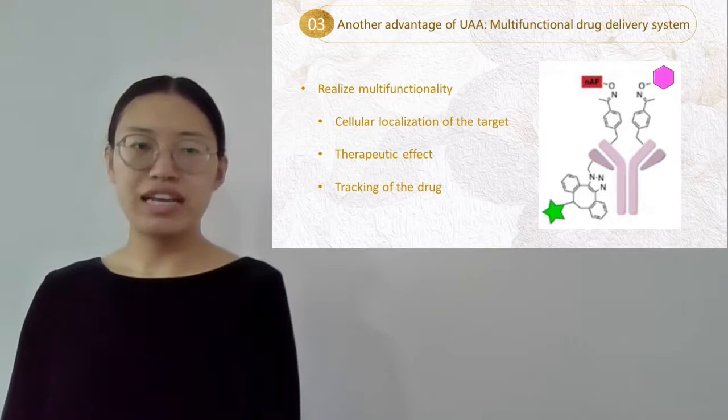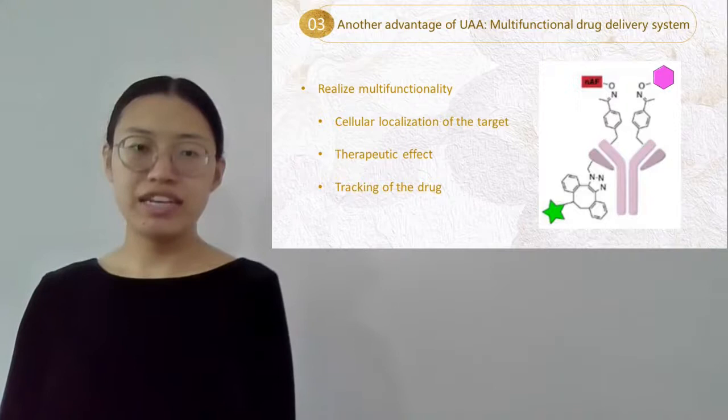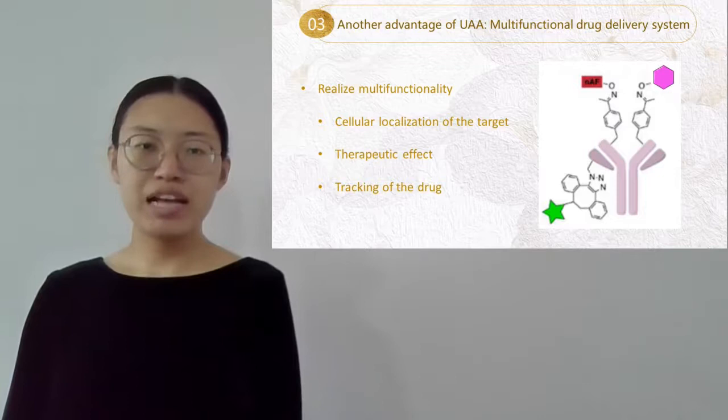The green star is an antibody, the red rectangle is a small molecule drug, and the purple hexagon is a fluorophore. So with those UAAs, we could develop a drug delivery system that enables both tracking of the molecule and localization of the target.